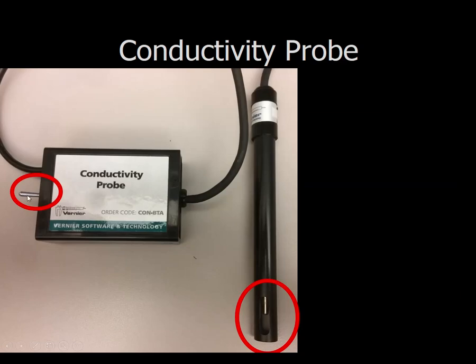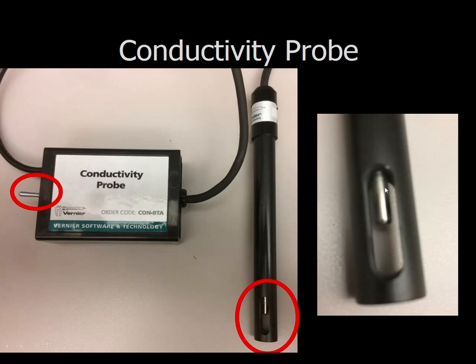Now, on the probe, you have this switch. This lets you set the range of the readings, and the lab will tell you what to set that range to. The tip of the probe, what's important to know, is that this part must be totally under the solution. So whenever you put the probe into the solution, this part should be totally covered up.